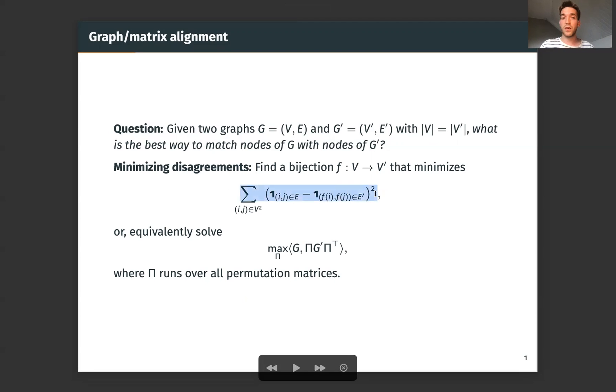So at this point you may think of the graph alignment problem as a generalization of the graph isomorphism problem. Indeed, if G and G' are isomorphic, finding such a bijection f is finding an isomorphism between the two graphs. In this case, this quantity here can be zero if f is an isomorphism. In the general case though, G and G' may not be isomorphic and we still ask the same question, what is the best way to align these graphs?